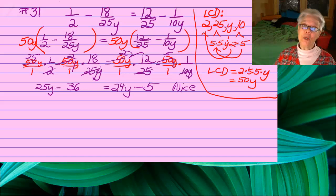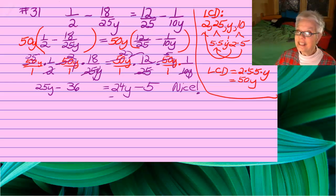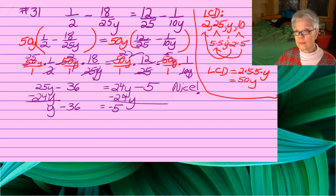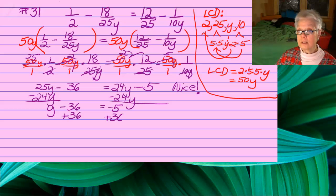Now we have a very nice equation with no fractions. Solve it the way you normally would. Subtract 24y from both sides of the equation, and we'll have y equals 31.